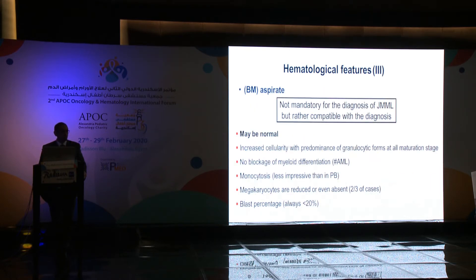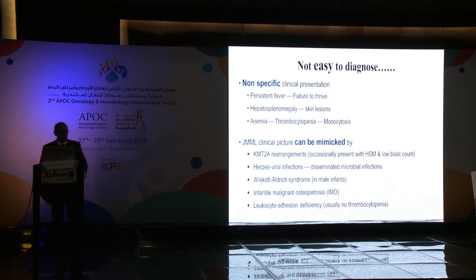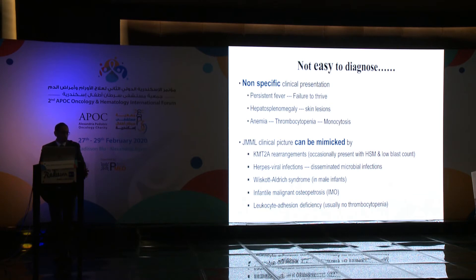Bone marrow aspirate is not mandatory to diagnose JMML but is complementary to exclude acute myeloid leukemia progression. The most common cytogenetic finding is a normal karyotype in two-thirds of cases; monosomy 7 occurs in 25%, where patients usually present with lower white blood cell count and moderate or normal hemoglobin F. JMML is not easy to diagnose due to non-specific clinical presentation, often mimicked by viral infections like Epstein-Barr virus, some AML subtypes with KMT2A rearrangement, immune deficiency disorders like Wiskott-Aldrich syndrome, and infantile malignant osteopetrosis.